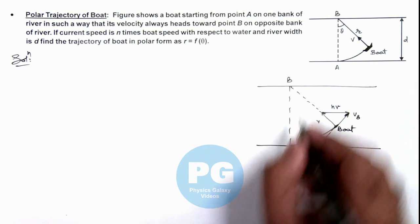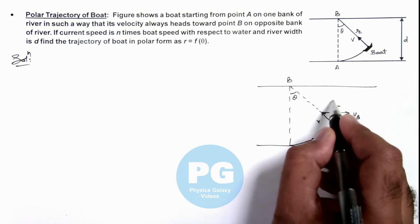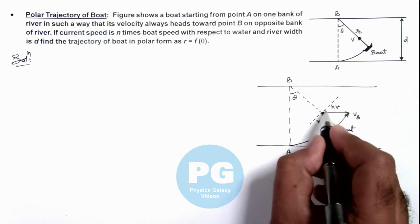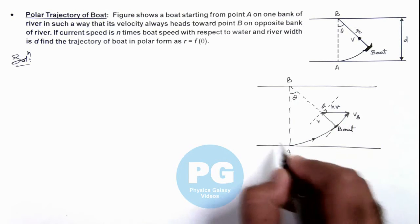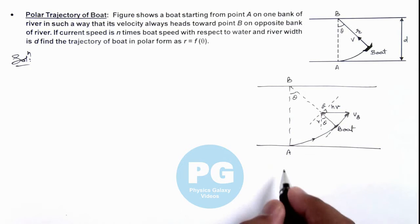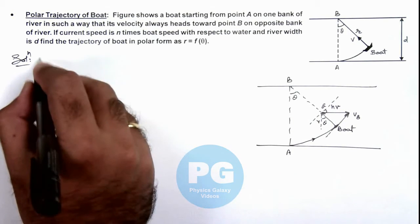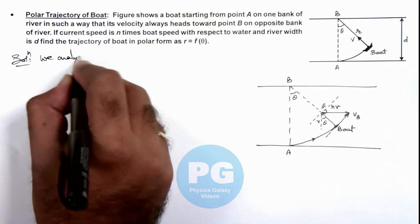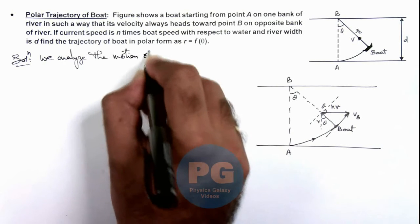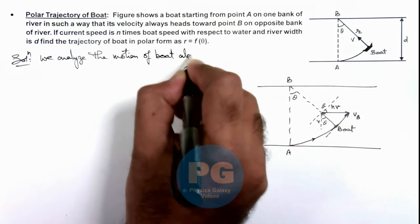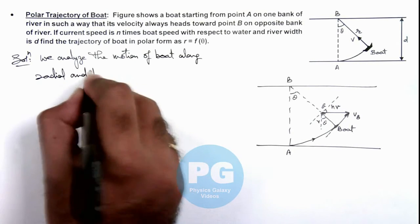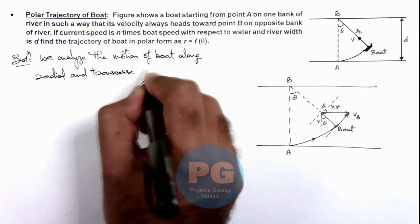So here, if this angle is theta, here if we draw the transverse direction which is normal to the position vector of the boat, this angle would also be theta. And here this angle would also be theta if this is the line parallel to line AB. So here we can say we analyze the motion of the boat along radial and transverse direction.